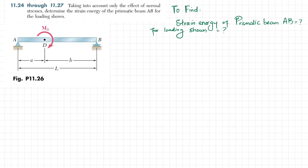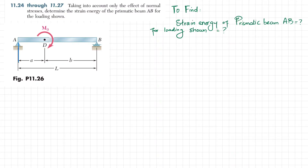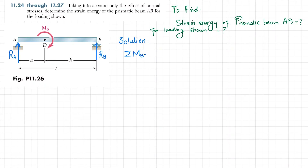The first step is to find the reaction forces. If we remove the fixed support at A there will be a reaction force R_A, and if we remove the roller support there will be a reaction force R_B. We will find these reaction forces in order to proceed further. We take the sum of all moments about point B equal to zero, taking counterclockwise moments as positive.